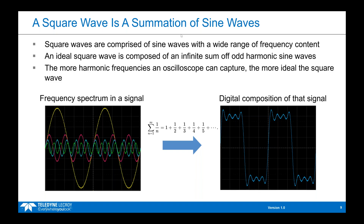More specifically, an ideal square wave is composed of an infinite sum of odd harmonic sine waves. Essentially, the frequency content oscillates in factors of odd-numbered frequencies. For example, a 1 MHz square wave has a fundamental frequency of 1 MHz, but additional frequency content at 3 MHz, 5 MHz, 7 MHz, and so on — an infinite sum of odd harmonics. The higher the oscilloscope bandwidth, the more of these odd harmonics it can capture, and the more ideal your signal looks.